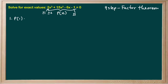P of positive 1 will not give us 0 — we'll have 2 plus 15, which is 17, minus 7, which is 10, so this is not 0. For negative 1, we'll have negative 2 plus 15 plus 6, so negative 2 plus 6 gives us 4, plus 15 gives us 19, minus 1 gives us 18 — so this is not 0 either. So let's move on to plus or minus 1 half.